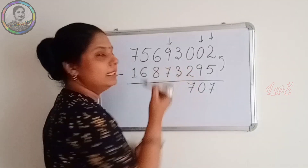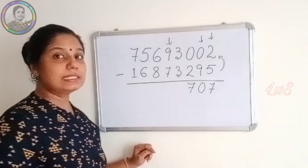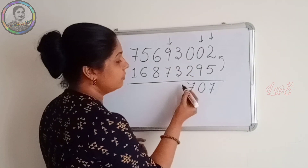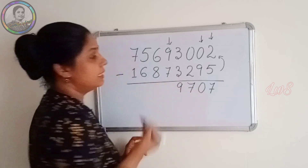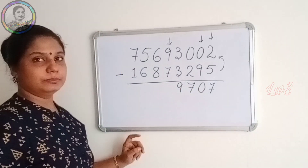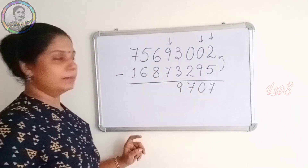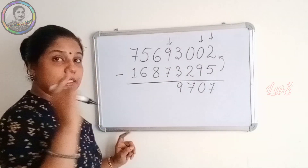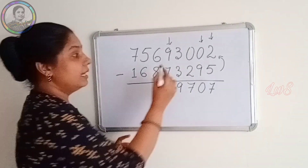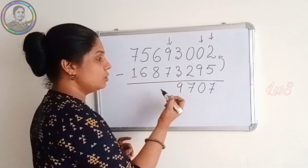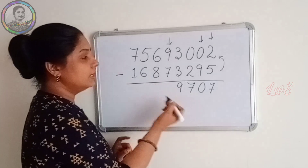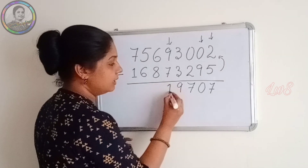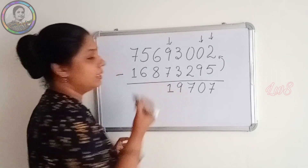So here again, 3 minus 3 is 0. But we write the complement from 9, which is 9. Now 9 minus 7 — it is actual subtraction. 9 minus 7 is 2. But to come out of the world of complement, we write 2 minus 1, which is 1.